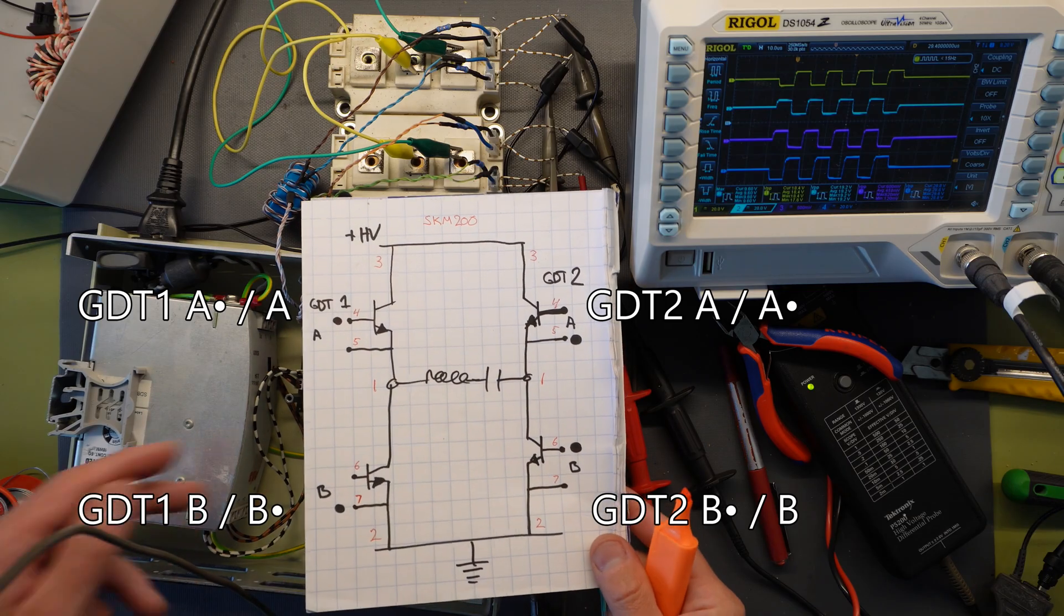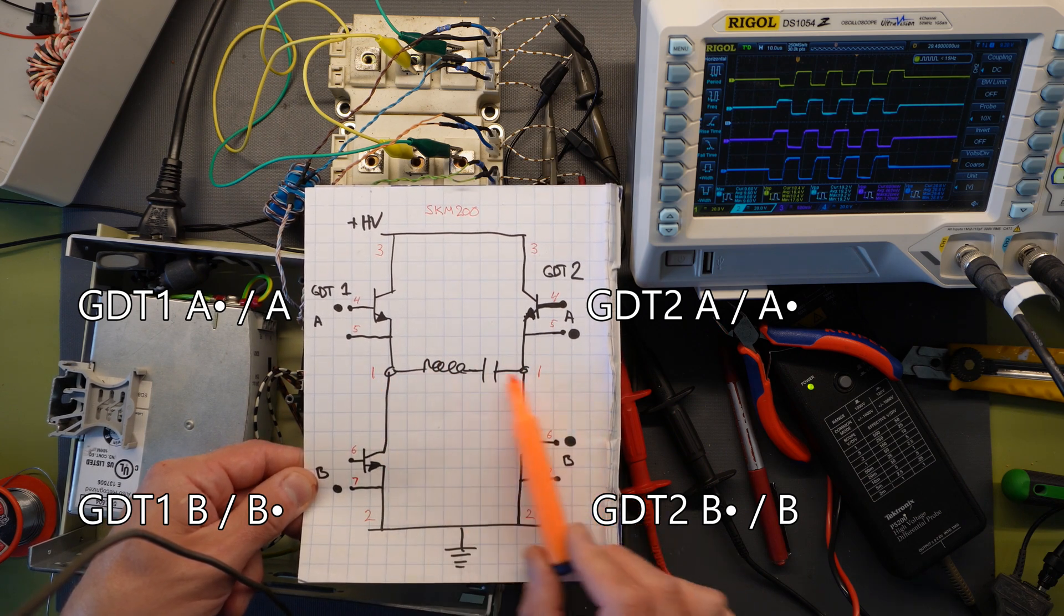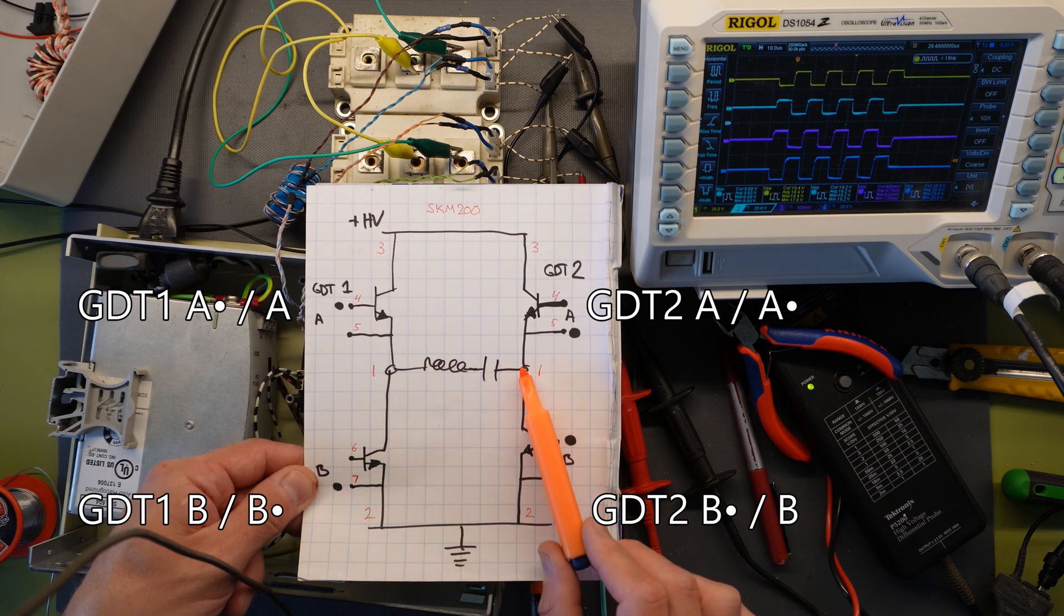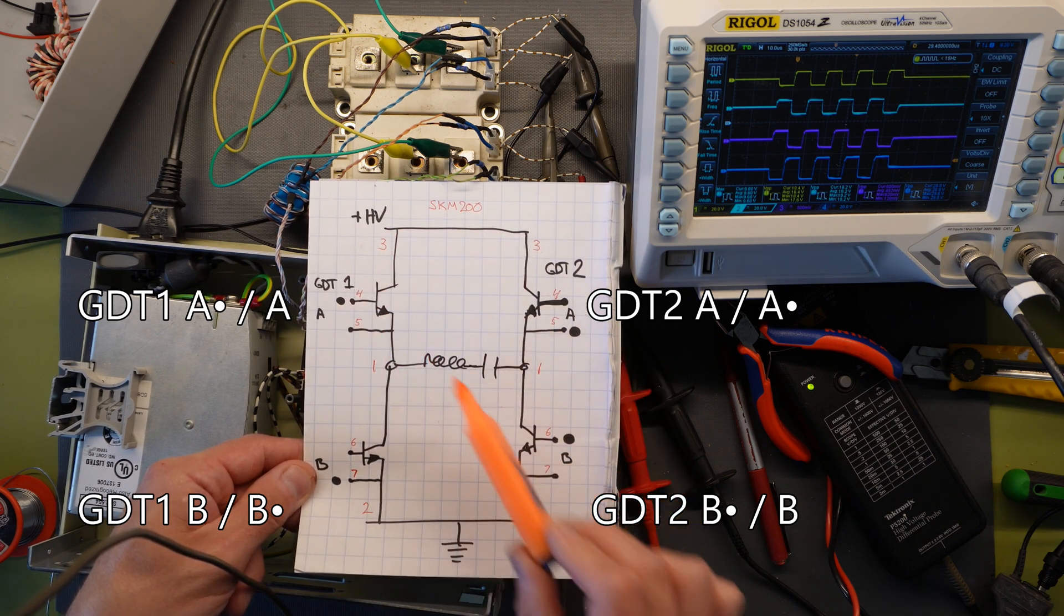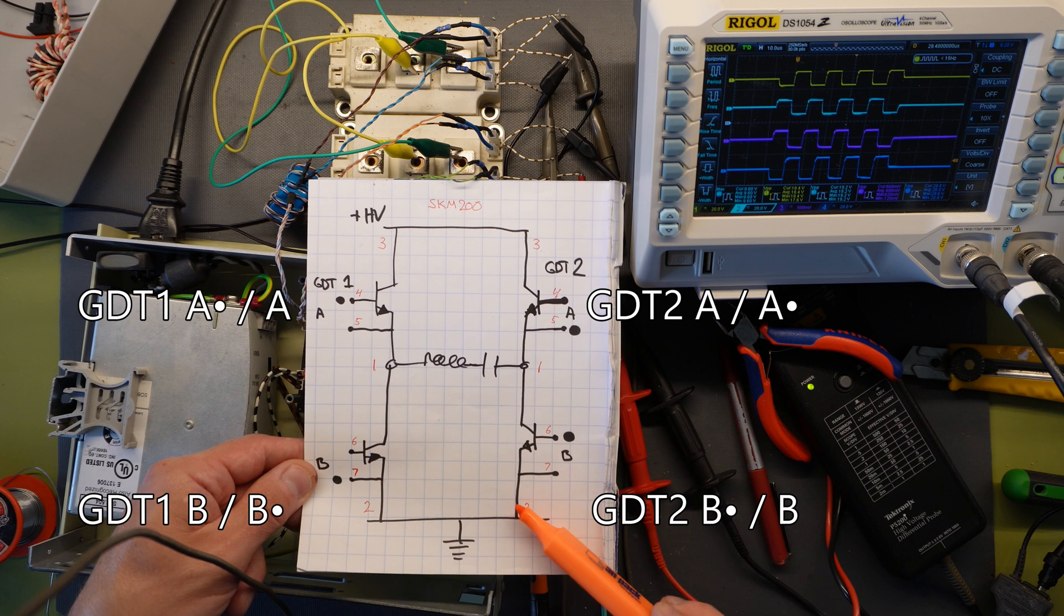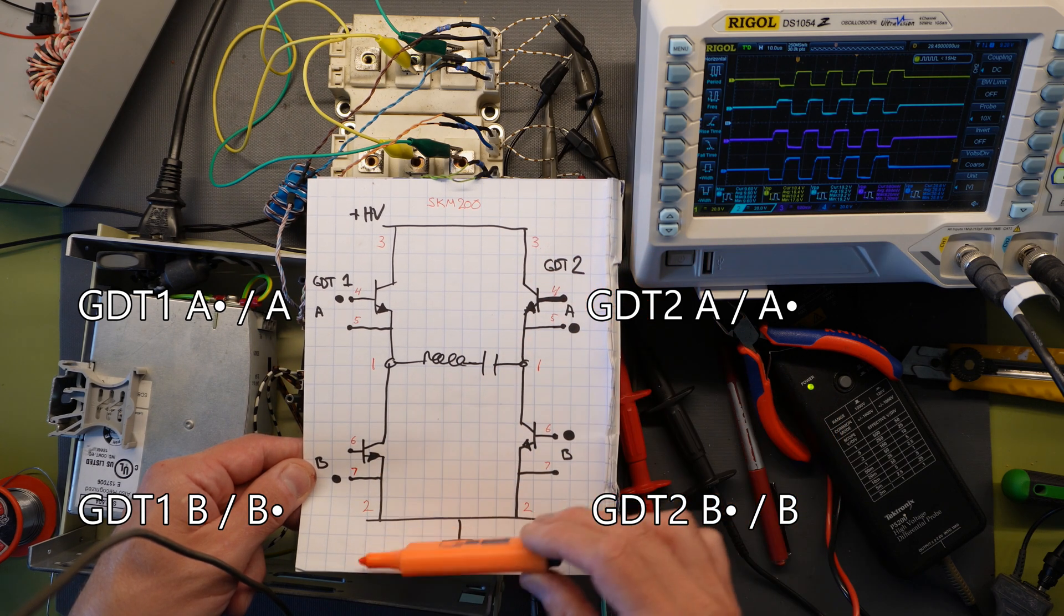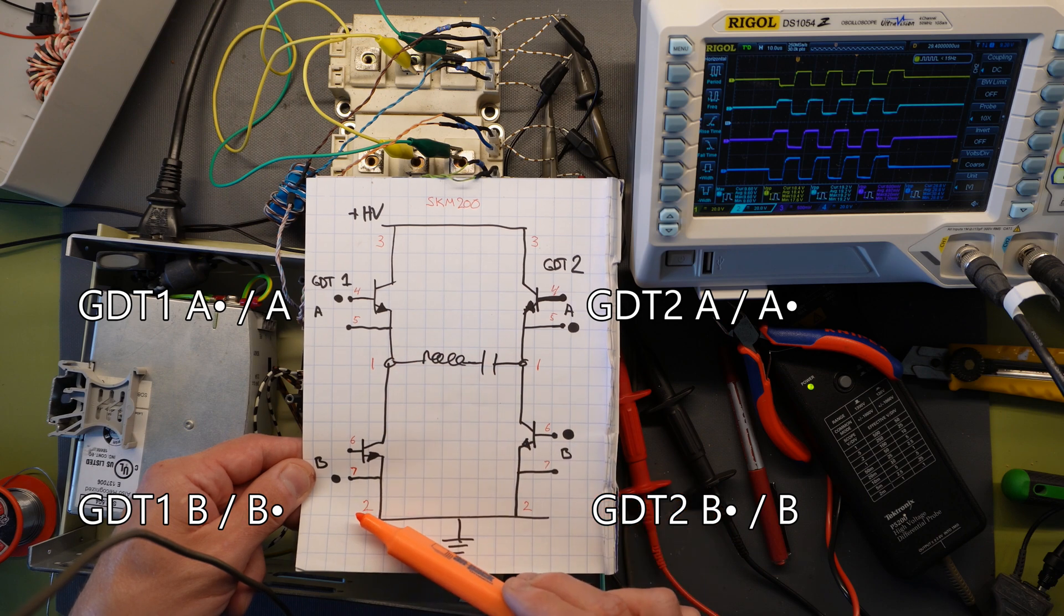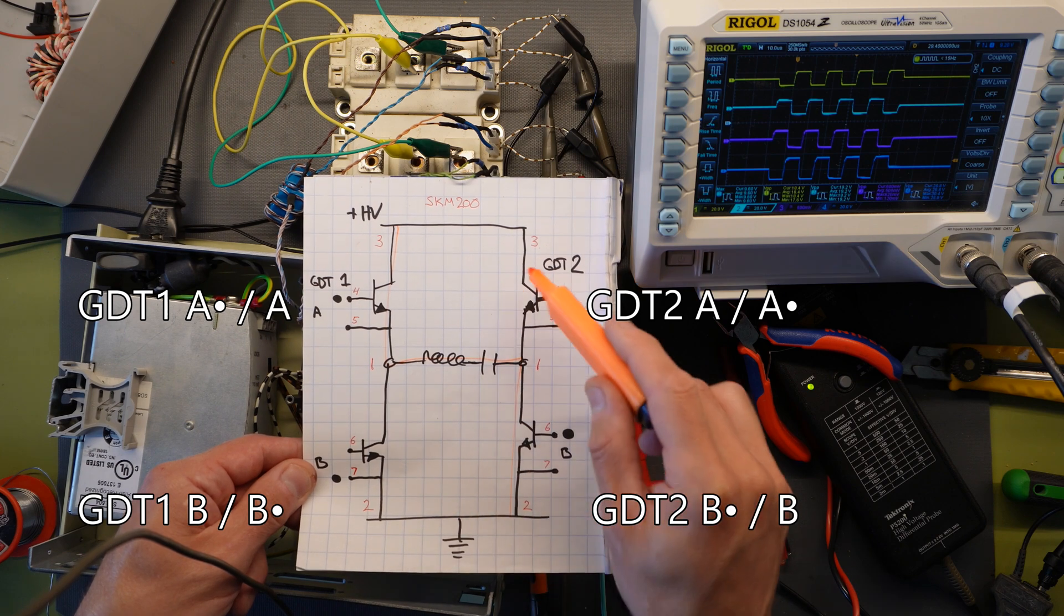In a full bridge we want to change the voltage or current flowing through the primary circuit. And we do that by turning on switch 1 and 4, so we have current flowing this way. And then turn them off. Then 2 and 3, so we have current flowing this way. So we have alternating current flowing over the load here.